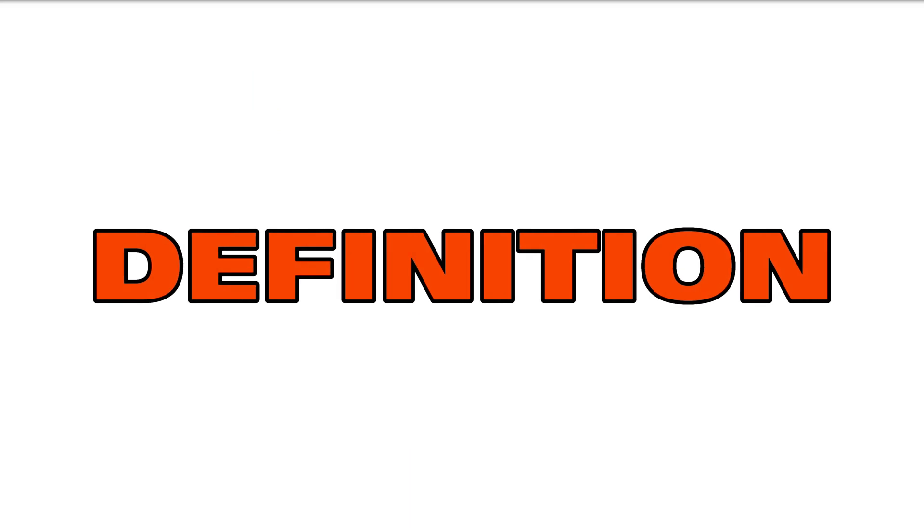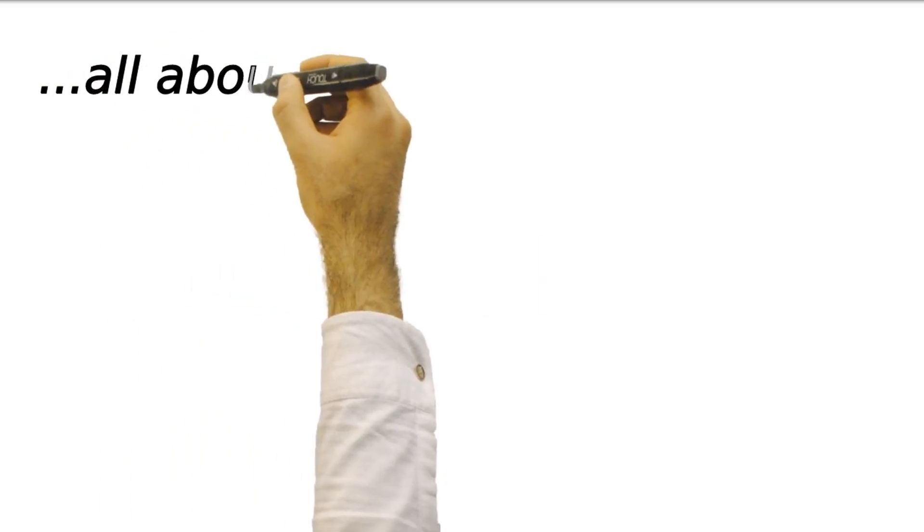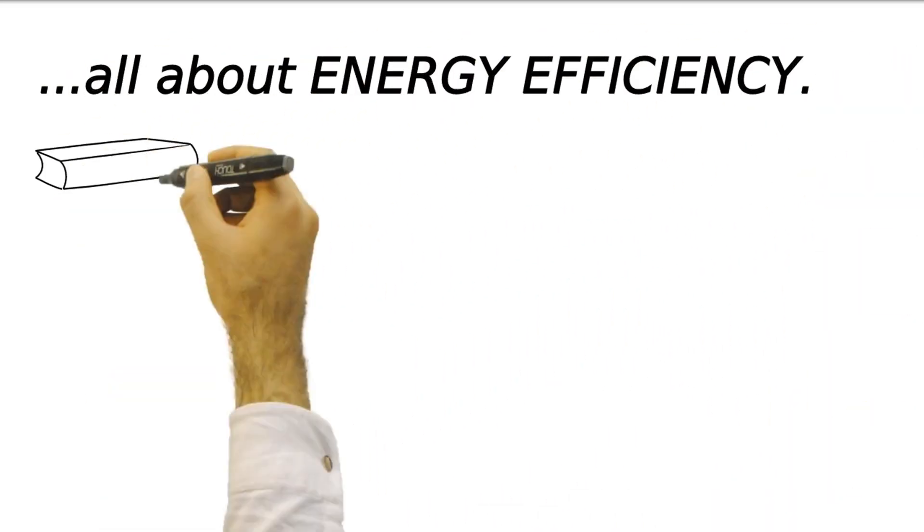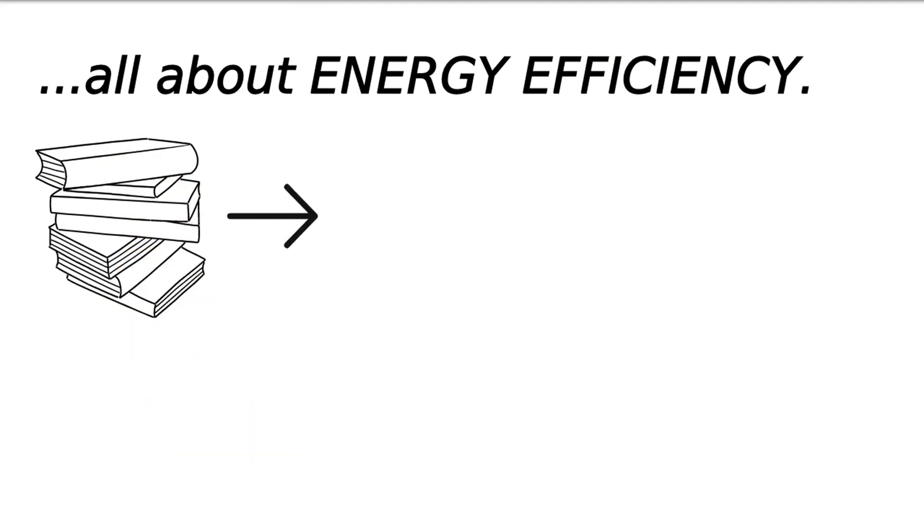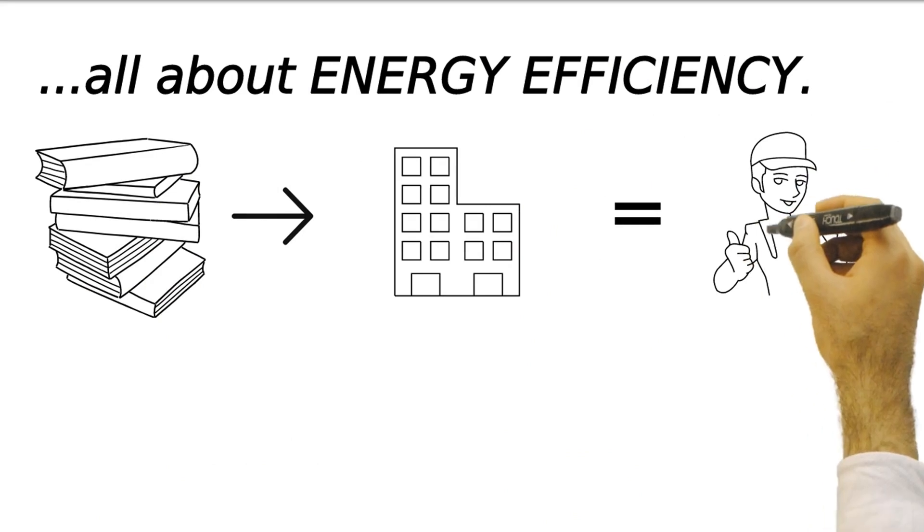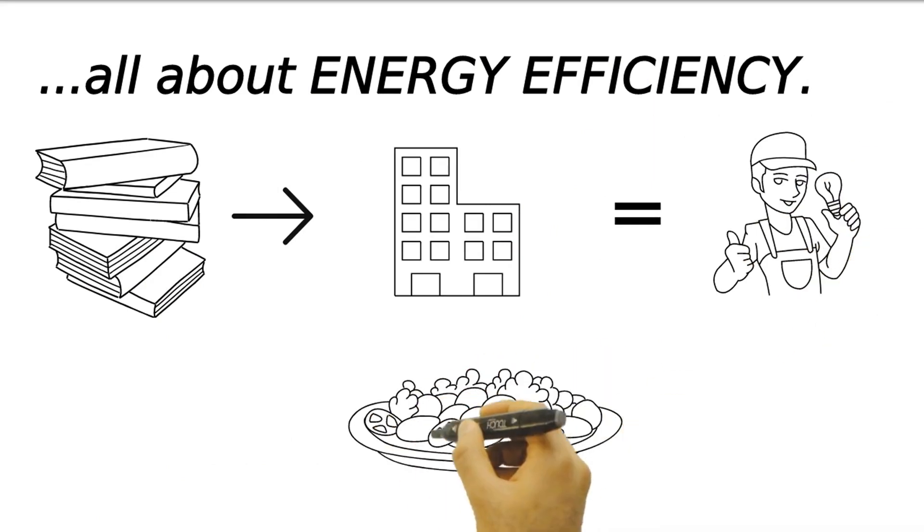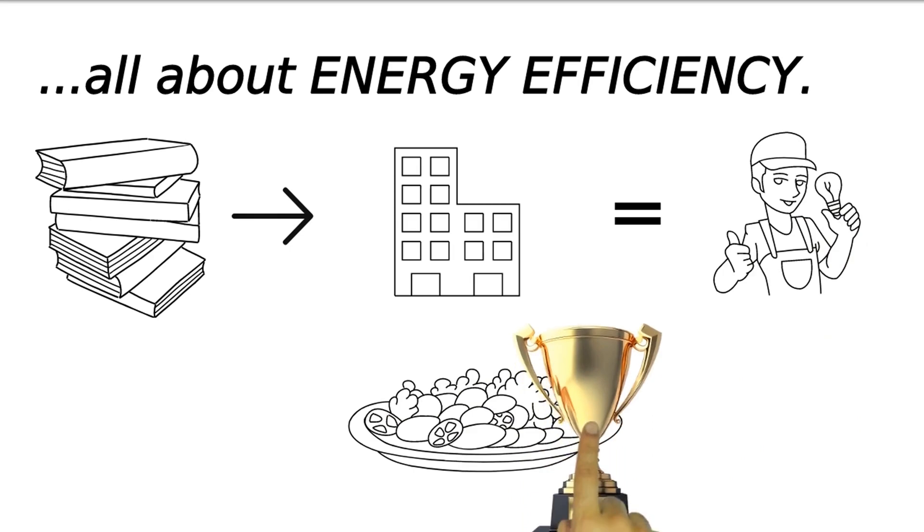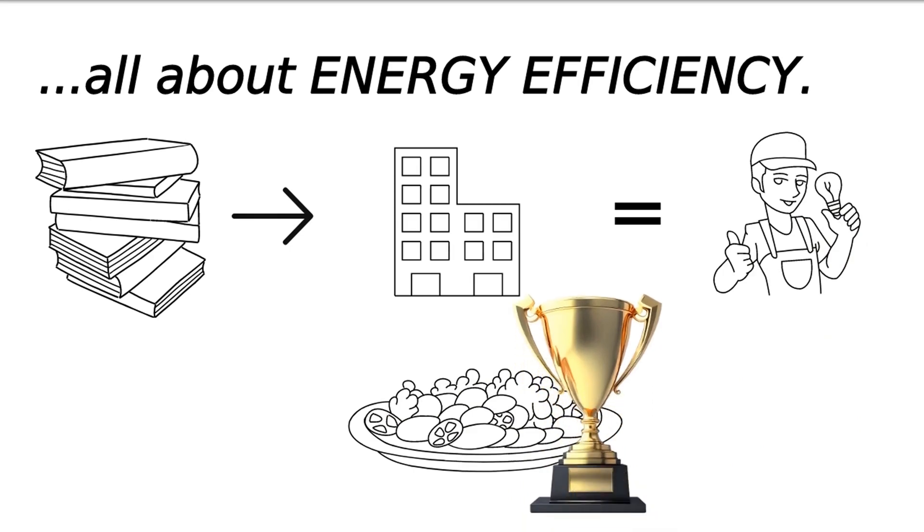ISO 50001, 2018 is all about energy efficiency. It's a set of guidelines that help organizations like yours manage and optimize energy use, just like a recipe for a perfect dish ensures the right ingredients are used. ISO 50001 ensures you use energy wisely, making your operations more efficient.